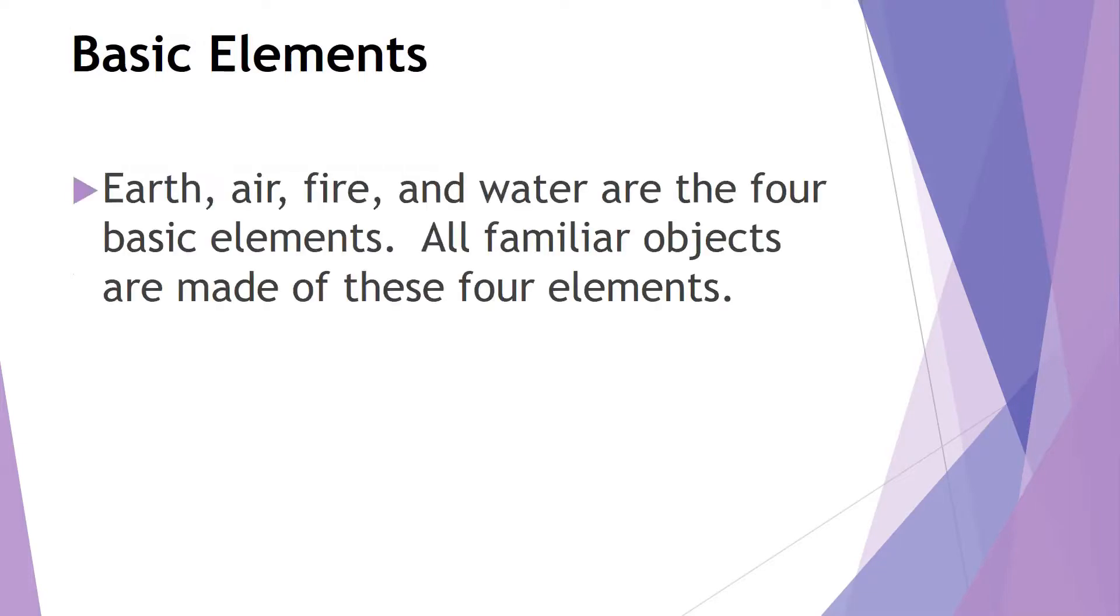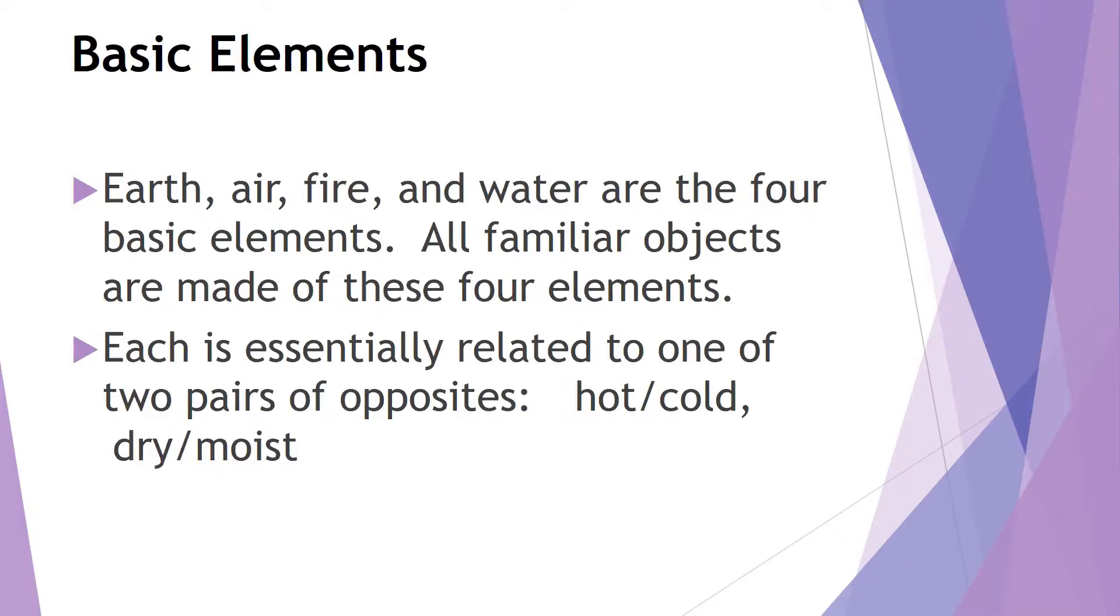So that doesn't mean Anaximander rejected the four basic elements that the Greeks generally thought existed. So we have earth, air, fire, and water. Those are the four basic elements, and Anaximander affirms that and says that all our familiar objects are made of these four elements. So biological entities like rabbits or trees, as well as inanimate objects like rocks or clouds, are all going to be made of these four substances. And for Anaximander, one thing that's very important for him is this idea that each of the substances,